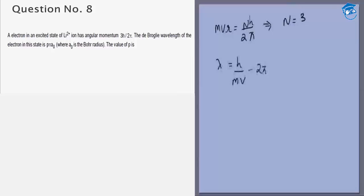We know the value of R according to Bohr quantization rules: R is given as a₀ times n² by z, where n is the orbital number and a₀ is the Bohr radius. In this case R will simply be 3² that is 9 into a₀ by 3.